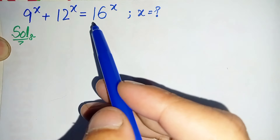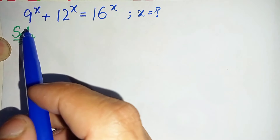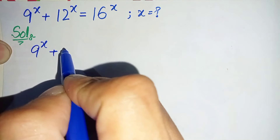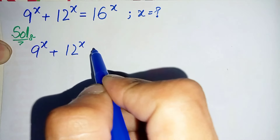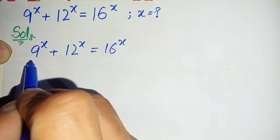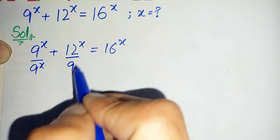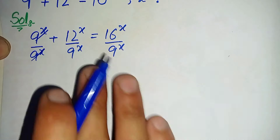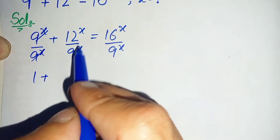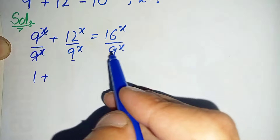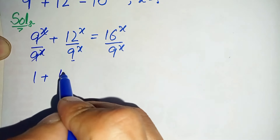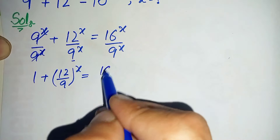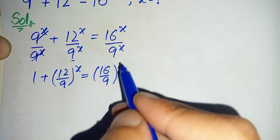In this exponential equation, first of all we will divide all the terms by 9 raised to power x. So we will cancel the 9^x terms, leaving 1. From the remaining terms we take x common from numerator and denominator, so this will become 1 plus (12/9)^x is equal to (16/9)^x.